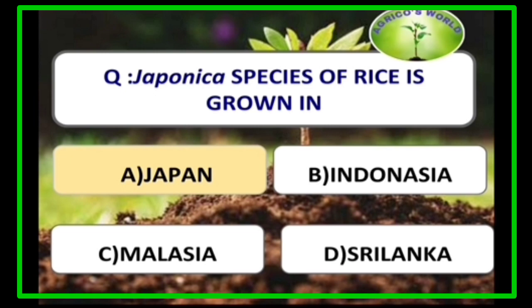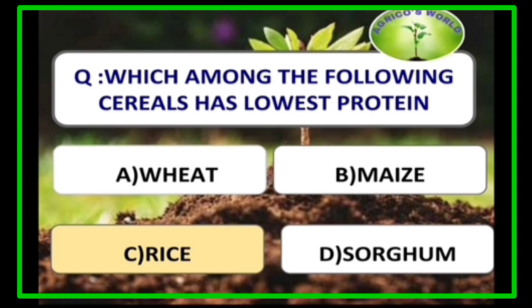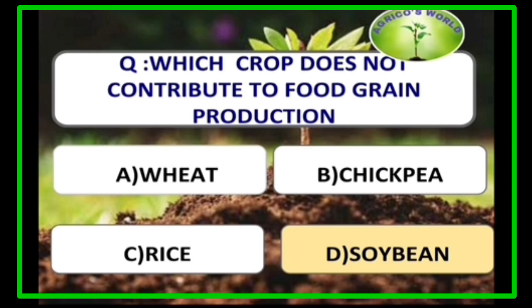Japonica species of rice is grown in Japan. Rice is the cereal with the lowest protein content, at 10–12%. Soybean is a crop that does not contribute to food grain production because it is an oilseed crop.